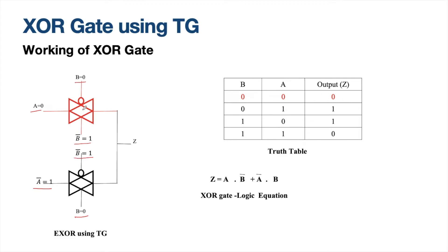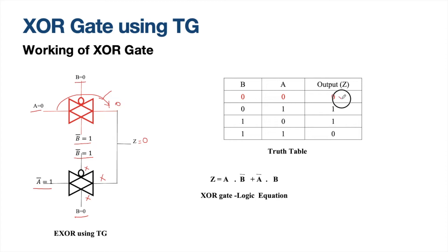All these values are assigned. A transmission gate switches on when 0 is given to PMOS and 1 to NMOS. TG1 and TG2 use a combination of PMOS and NMOS — both should be on. When B_bar equals 1, PMOS is off; when B equals 0, NMOS is off — so TG2 is off. TG1 is switched on because NMOS receives 1 and PMOS receives 0. Since A equals 0, the output at Z will be 0. So Z equals 0 — correct.